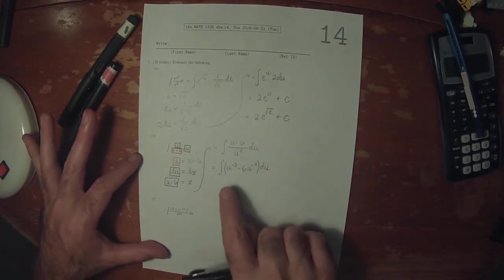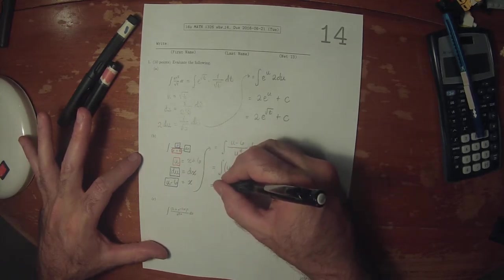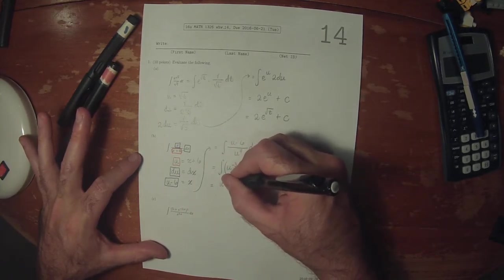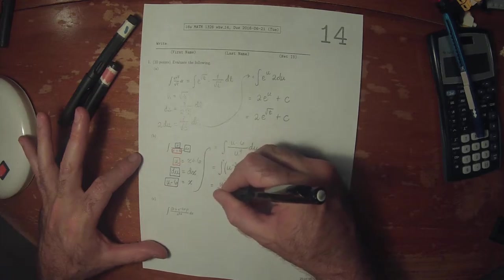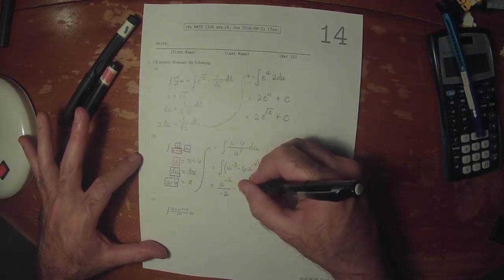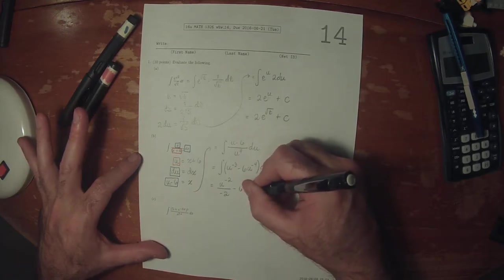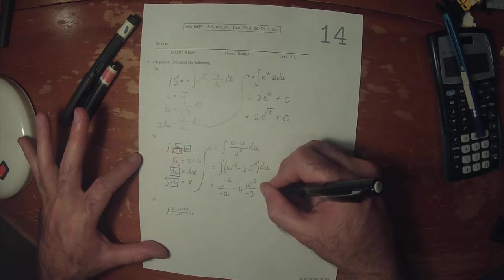And now we can use the power rule on each term. So that would be u to negative 2, divide by negative 2, minus 6, u to negative 3, divide by negative 3, plus an unknown constant.